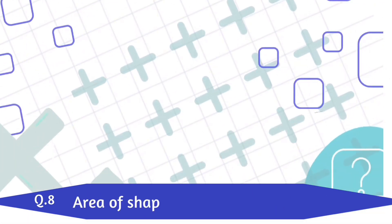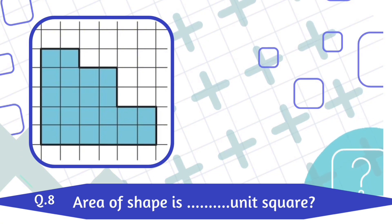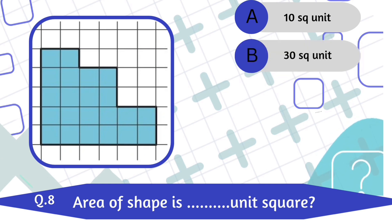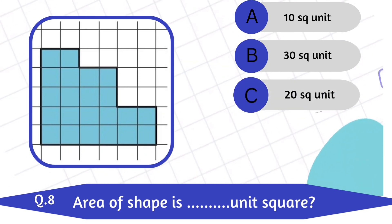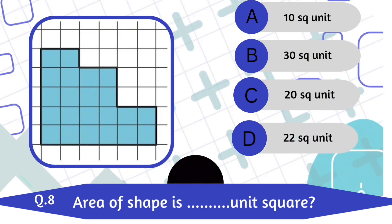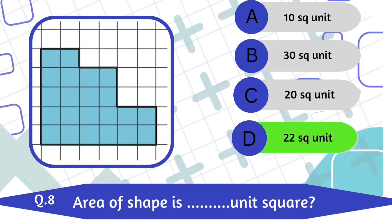24 square unit is the correct answer. Question number 8. Area of shape is dash unit square. A. 10 square unit. B. 30 square unit. C. 20 square unit. D. 22 square unit. 22 square unit is the correct answer.